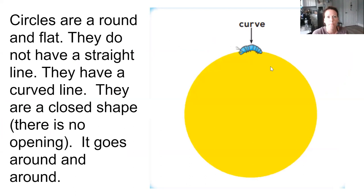They are also flat, they're a flat shape. I'm going to show you this circle that I have. It is flat. They have a curved line. You can see this worm here and he's going along the curve.